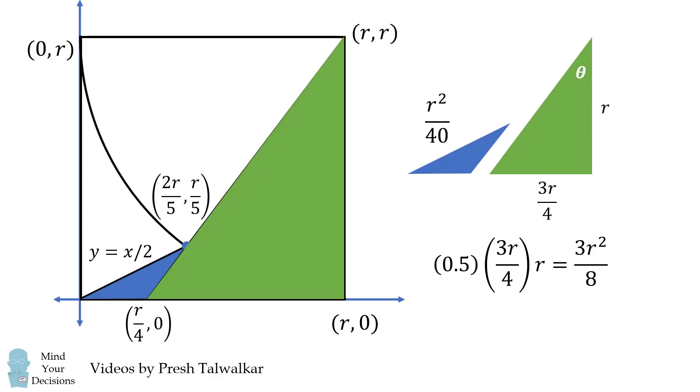Now for the next part, we'll need to know this angle theta right here. Notice this is a right triangle, and its base is 3R over 4, and its adjacent side is R. So theta will be equal to the inverse tangent of 3 fourths.